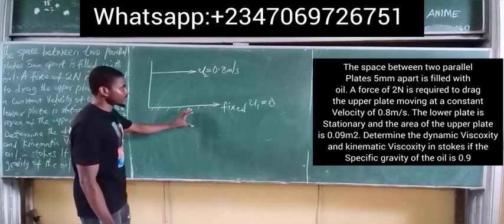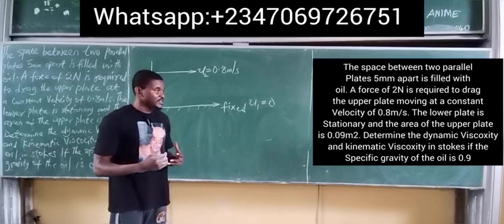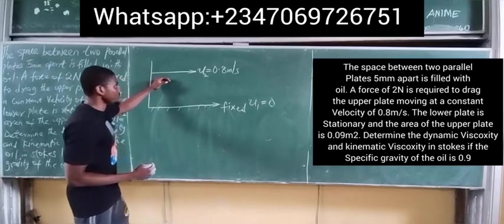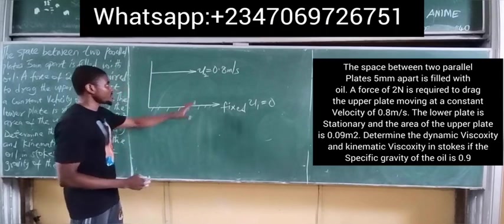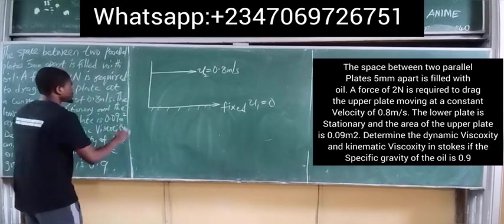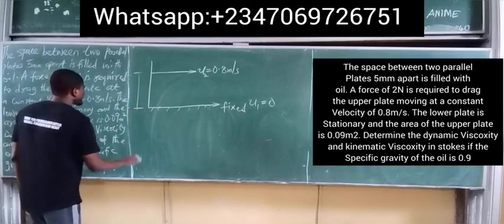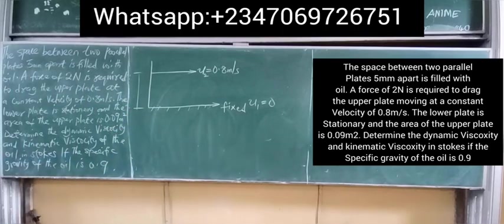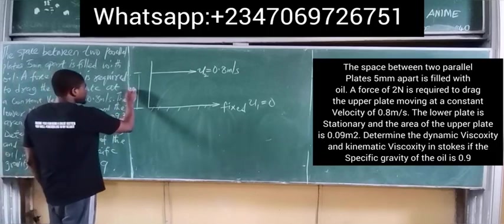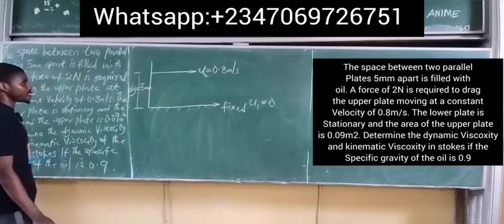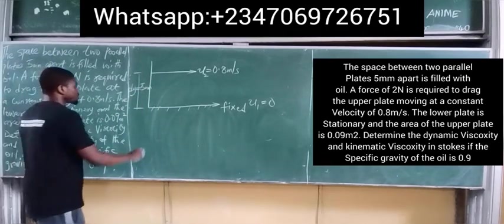The first plate is fixed, therefore its velocity is zero — it is non-movable. The upper plate is moving with a speed of 0.8 meters per second, call that u2. The space between the two plates is five millimeters apart, so y equals five millimeters, which is the thickness between the plates.